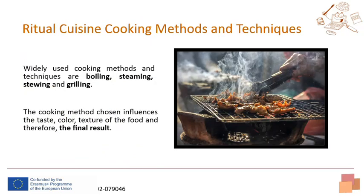In the kitchen — ritual cuisine cooking methods and techniques: widely used cooking methods include boiling, steaming, stewing, and grilling. Cooking in different ways leads to different results; the cooking method chosen influences the taste, color, and texture of the food and therefore the final result. It is very important to determine the appropriate cooking method according to the desired end result. Knowledge of cooking techniques enables the chef to work with different ingredients, understand their specific characteristics, and use the proper equipment to achieve a good result.